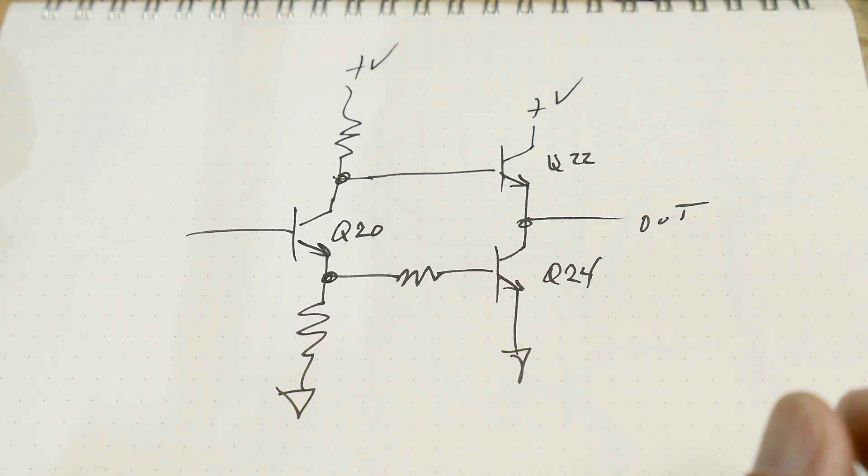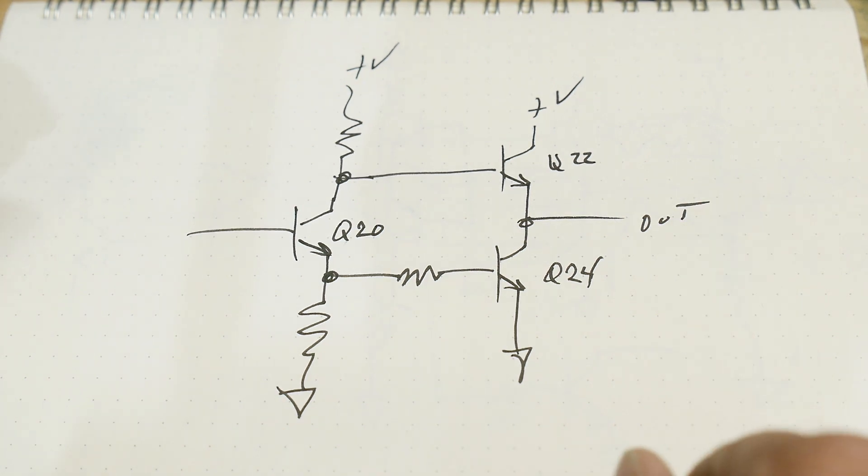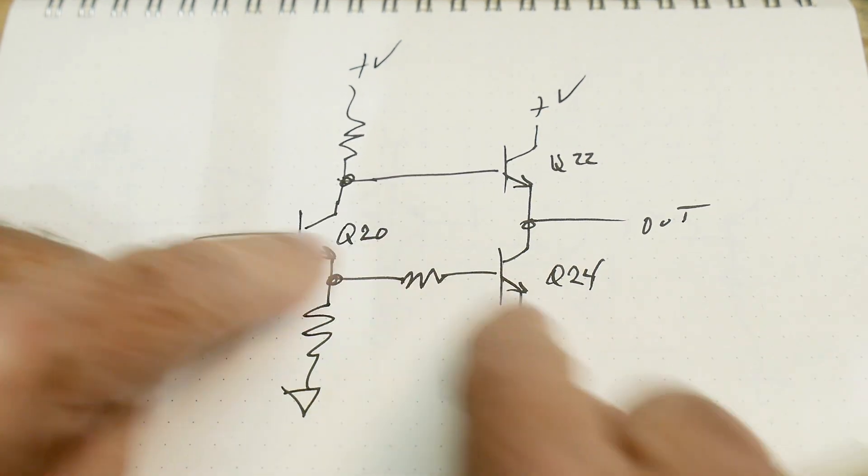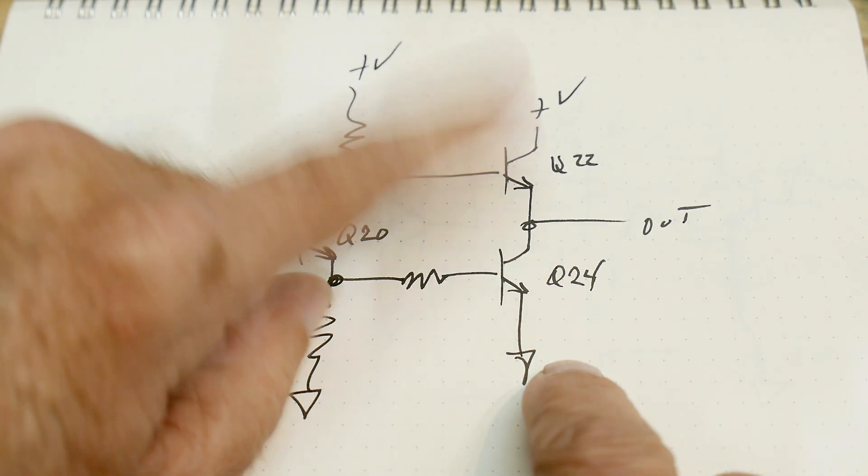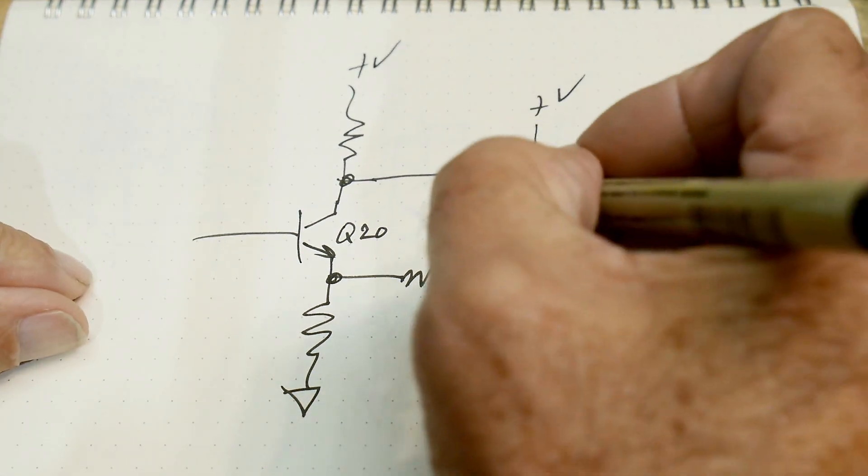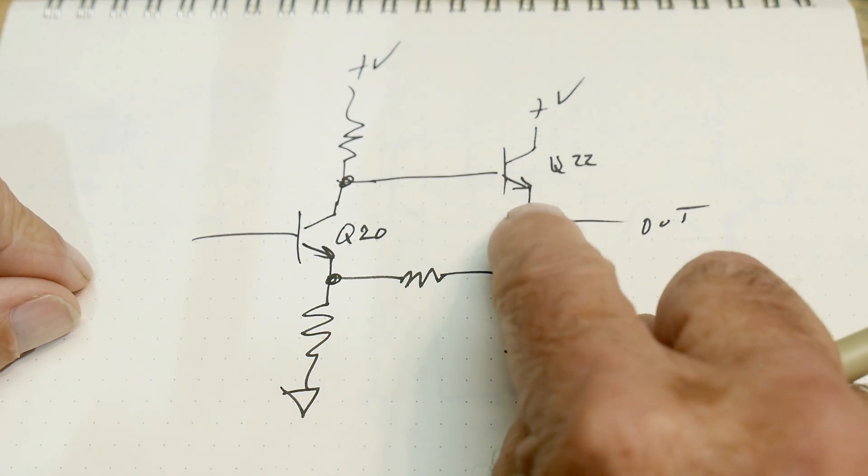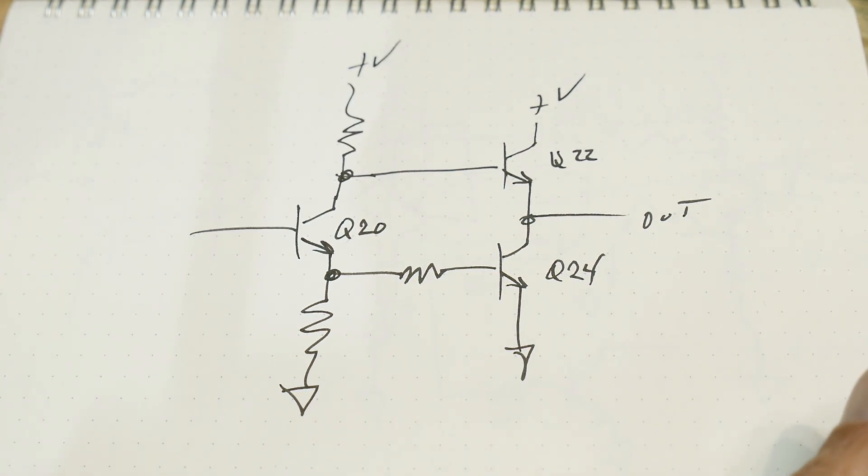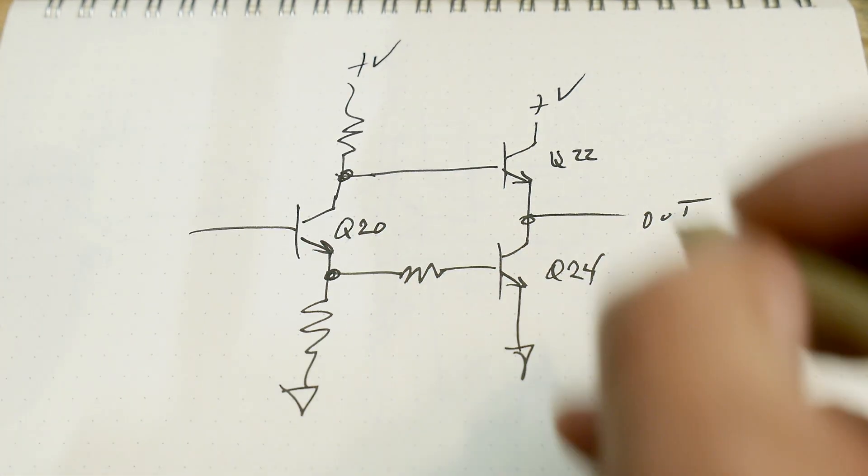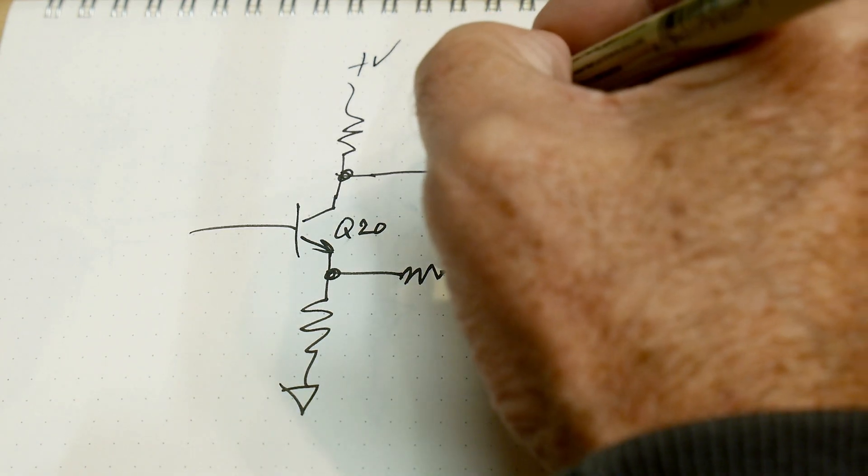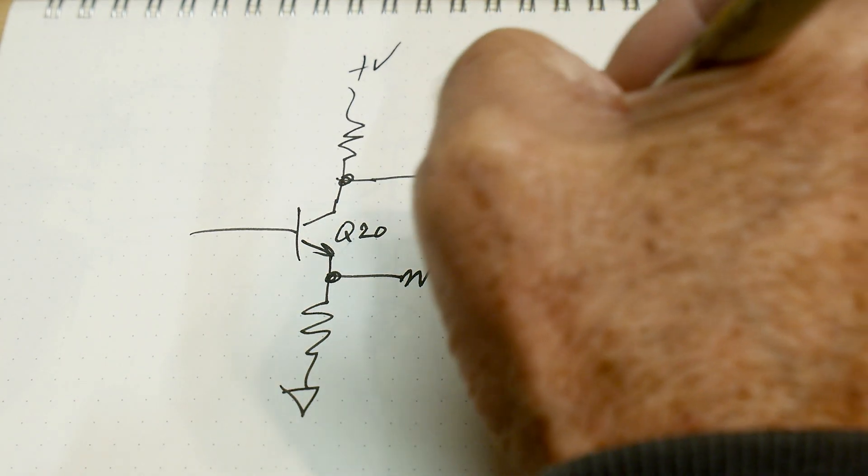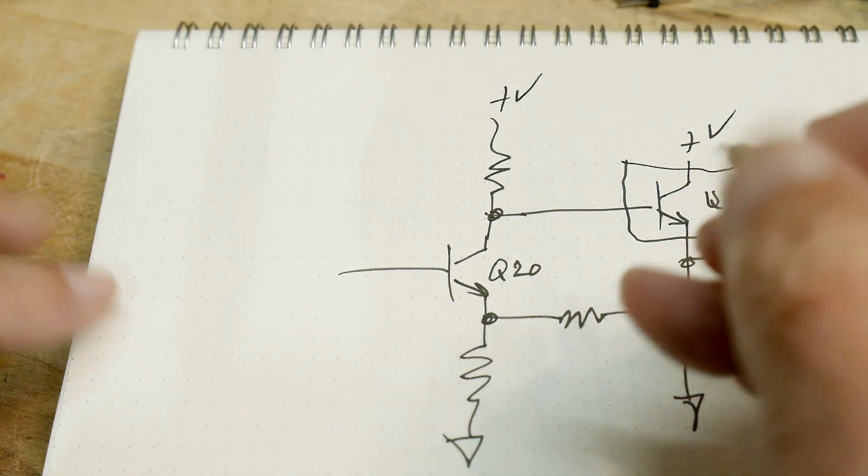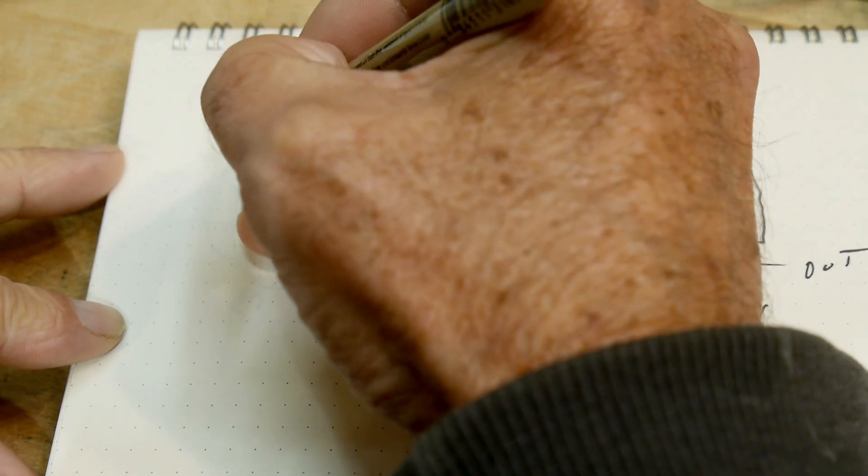I talked about how we have two diode drops going this direction but we only have one diode drop going this direction. We can put in that diode here just like the TTL parts did. But what they did, I'm going to draw a little box around this. I'm going to draw what that actually is.